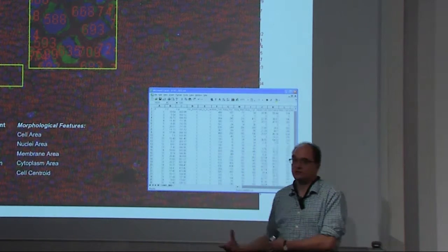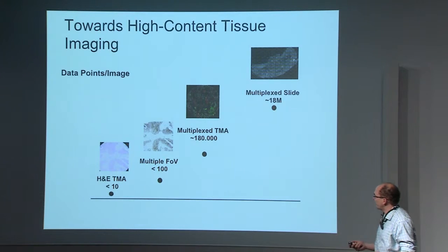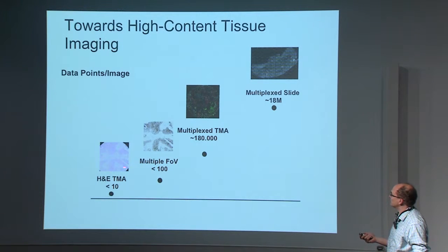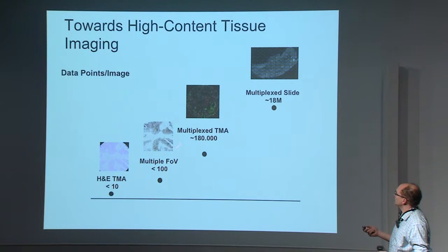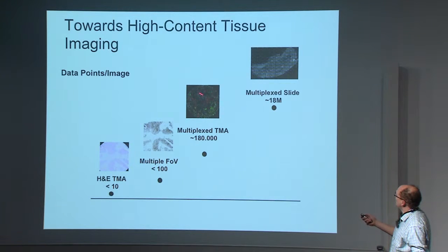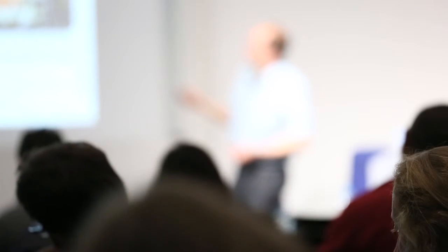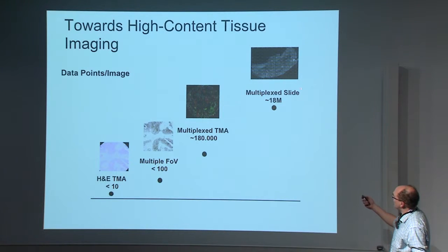For tissue microarray — which is like a little tissue stamp — you probably have up to ten measurements. If you have multiple fields of view you get a hundred measurements, and then you scale up until you have a whole multiplex. A whole multiplex TMA already has a hundred and eighty thousand measurements.